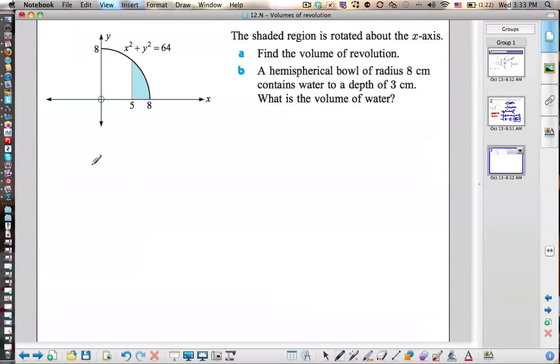First, what should we do, Mr. Rops? Well, we have a circle there that's going from 5 to 8, only part of it. So we need to, if our radius is going from the x-axis to the edge of the circle, that's a function f of x.